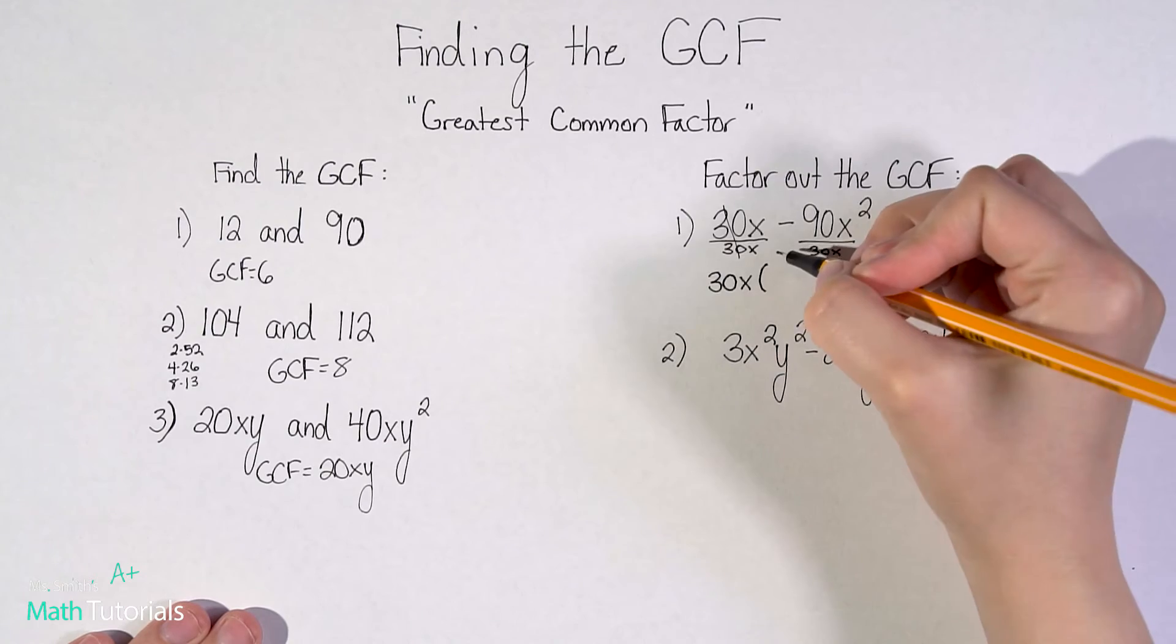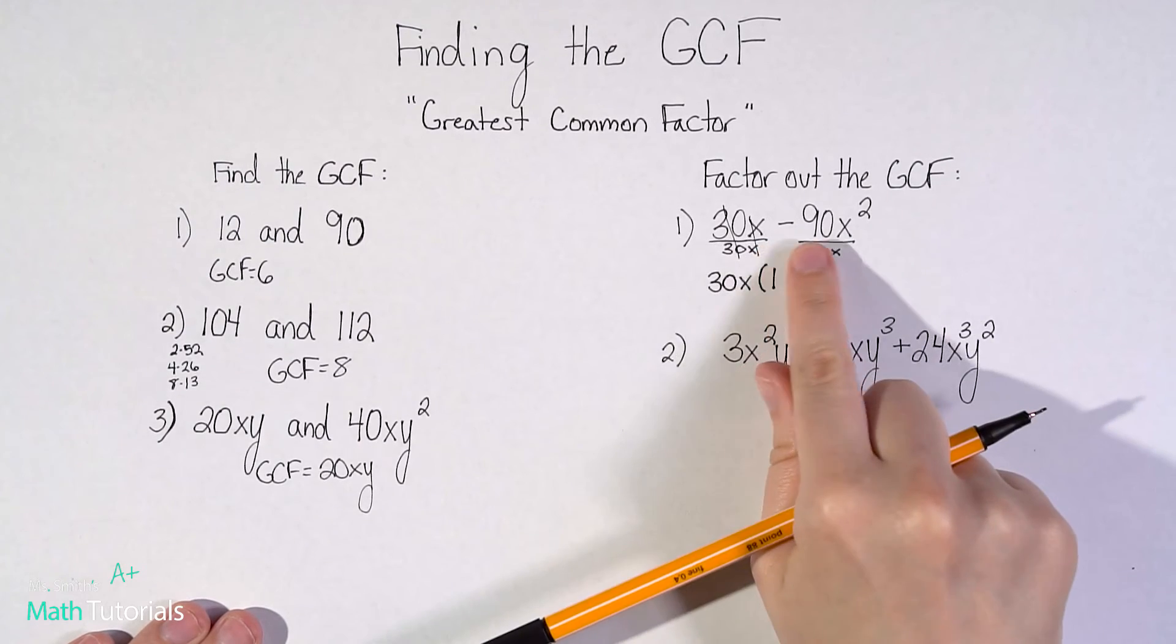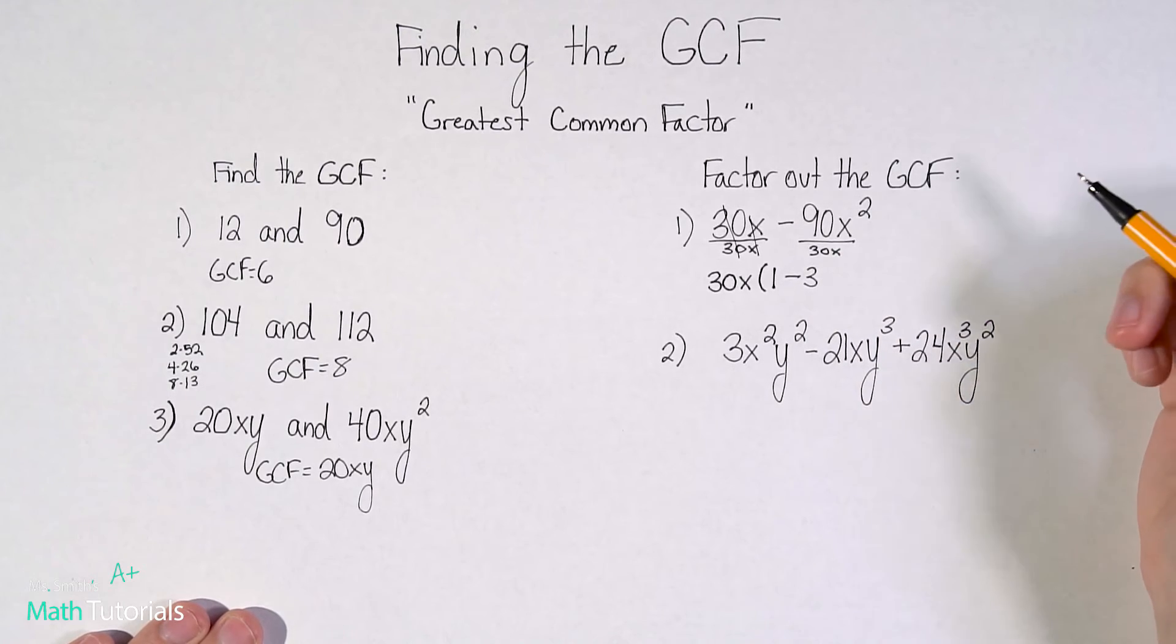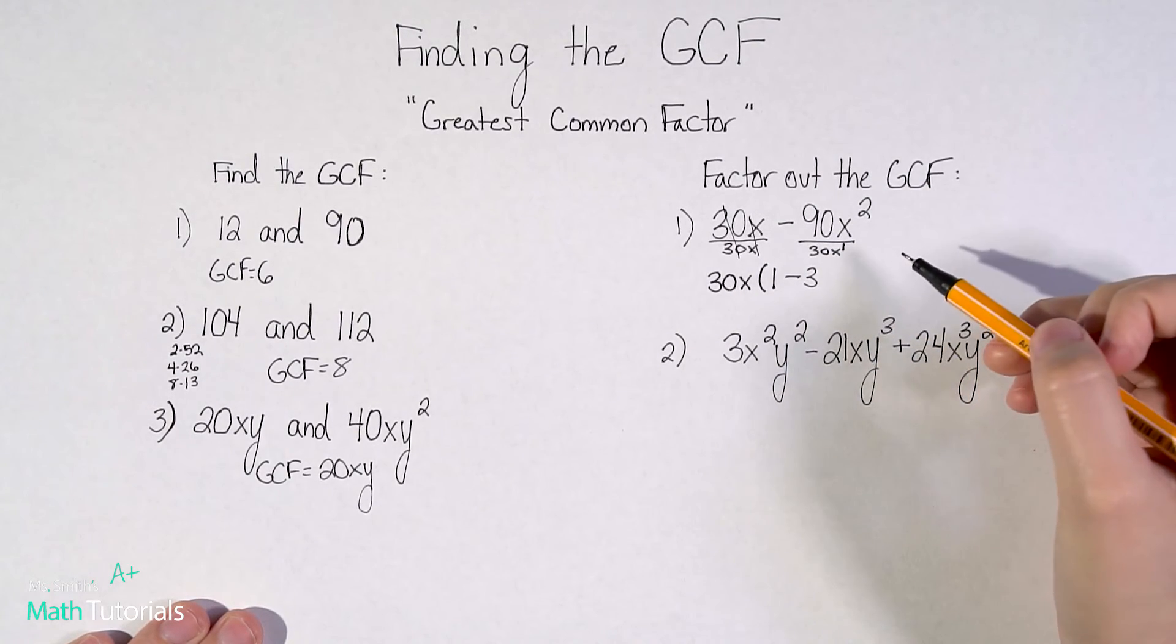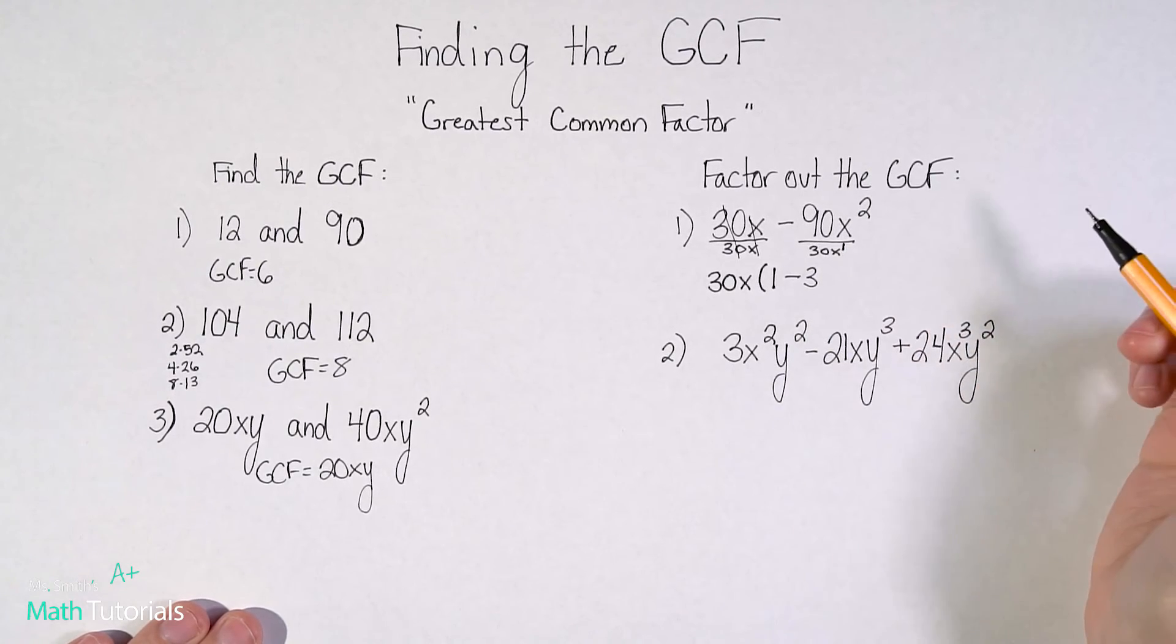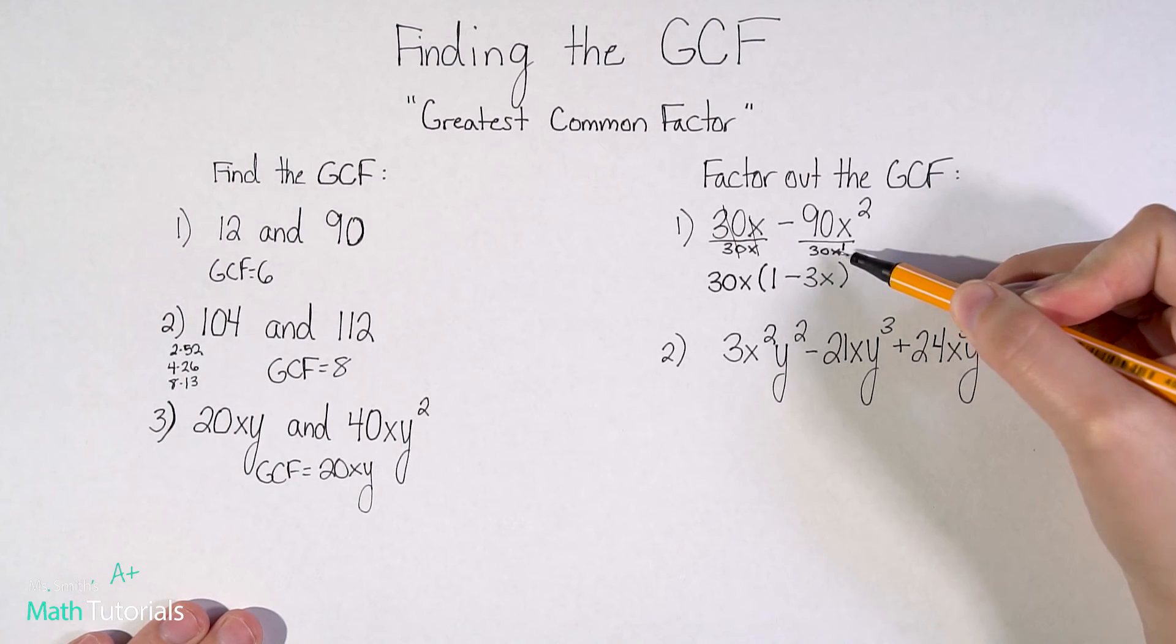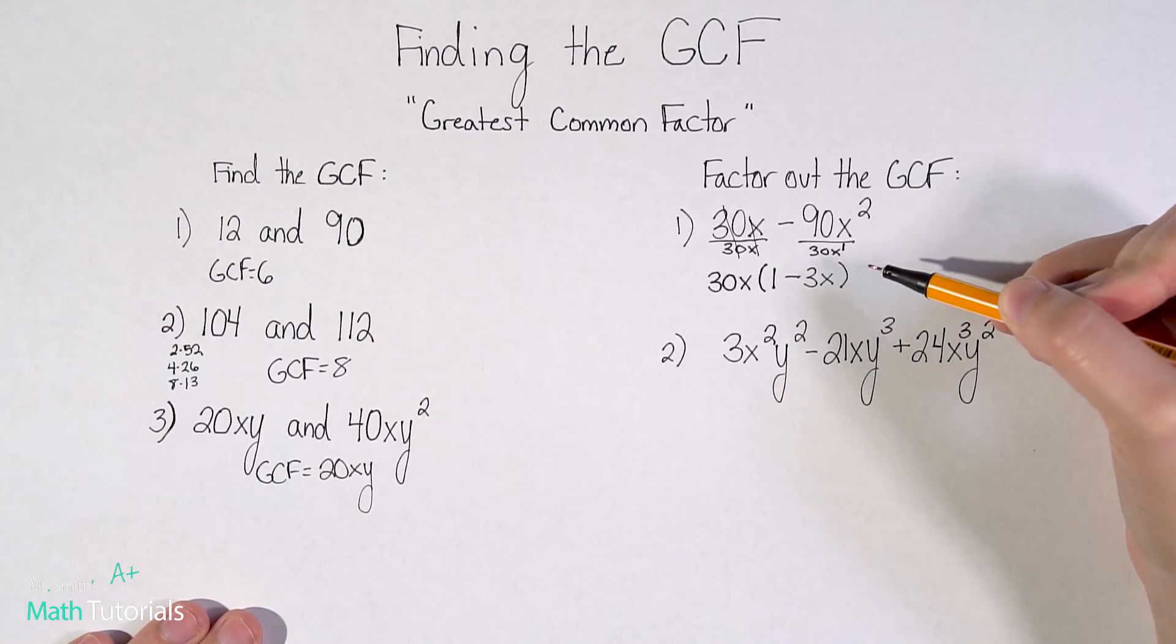So what is 30x divided by 30x? Well, that would just cancel, right? The 30 and 30 would cancel, the x and the x would cancel. So we would just have one, one left. What about negative 90 divided by 30? Well, that would be negative three. And what would x squared divided by x be? There's two ways to think about this. You can say, I'm dividing with exponents, right? And when I divide with exponents going way back to unit one, I would take the top exponent and subtract the bottom exponent. So two minus one, which would just be one. You can think about it like that, or some students prefer to think about it like, I had two x's, I'm pulling one out, how many do I have left? Which is really saying the same thing, it's just kind of making it a little more simple. Some students prefer to think of it that way.